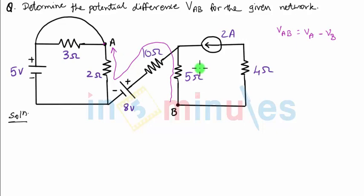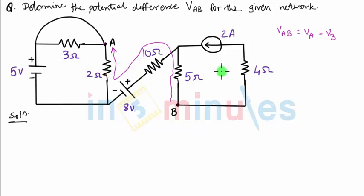To get the voltages across the resistors, we will have to find out the currents flowing through them. Let's find the current through the 5 ohm resistance, then the current through the 10 ohm resistance, and the 2 ohm resistance — so these are the three currents that we have to find out.